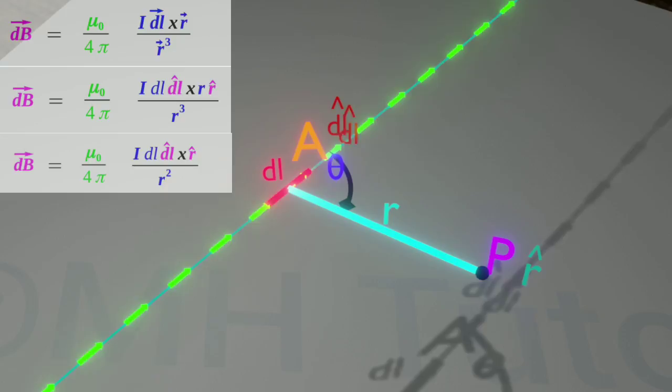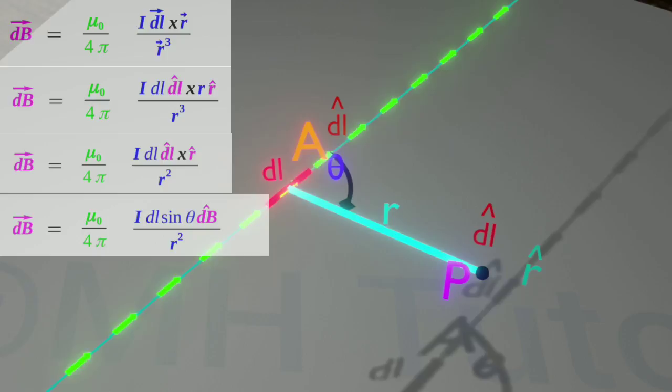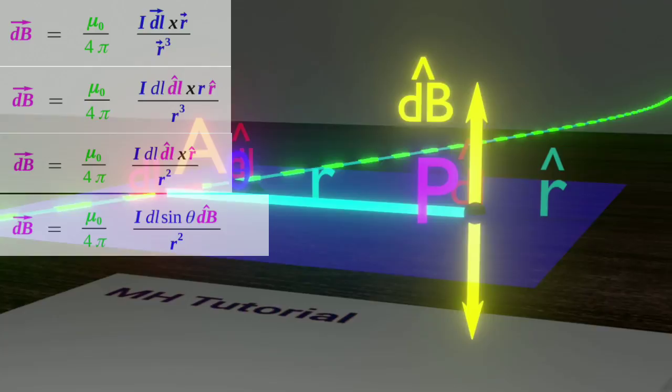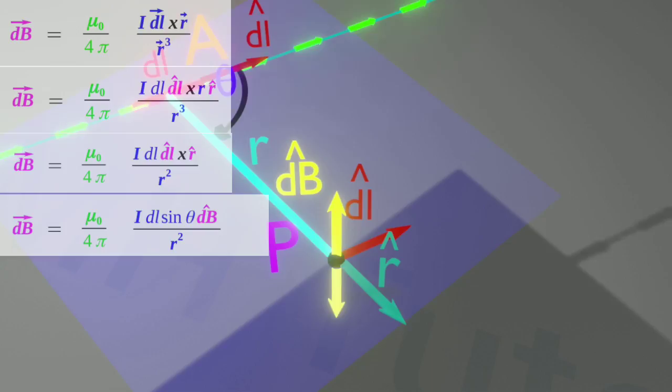The direction of dB is the cross product of cap DL and cap R. If we calculate the cross product, we get sine theta into cap dB. Where cap dB is the direction of the vector dB. And it is perpendicular to the plane that contains vectors DL and R.